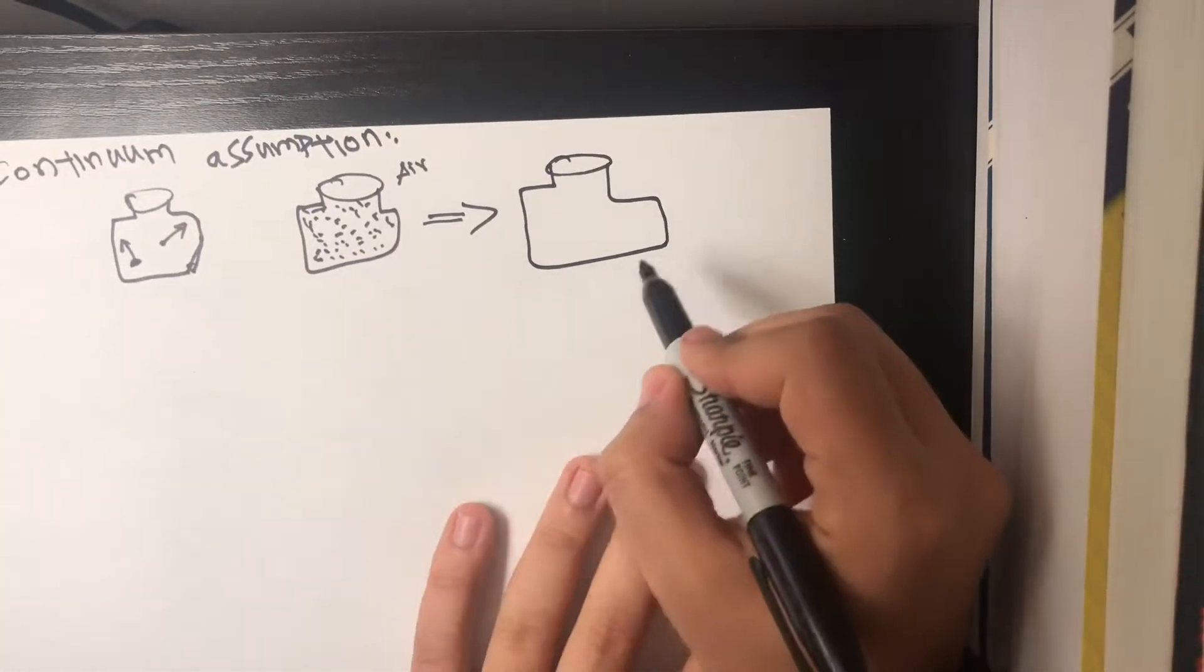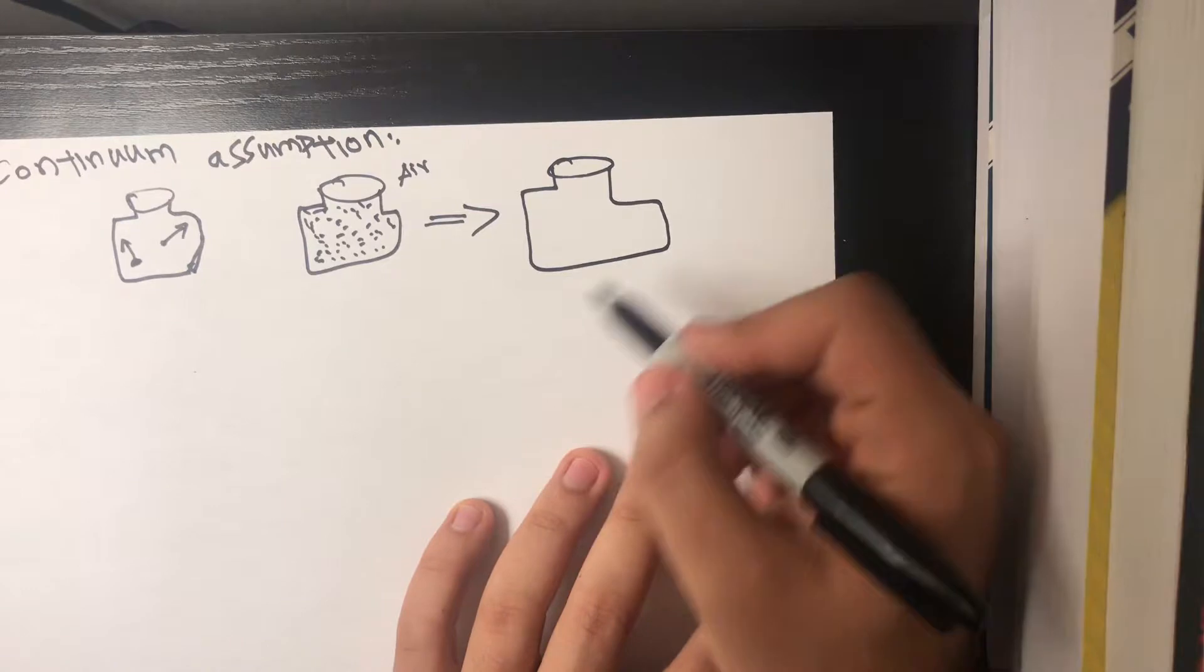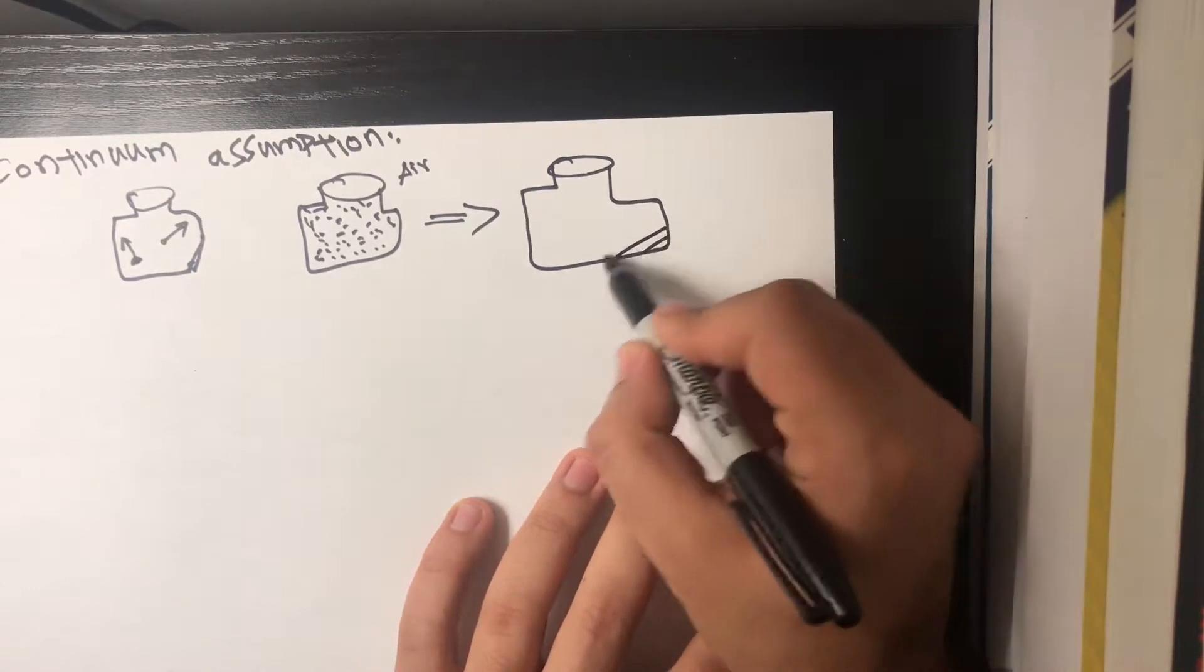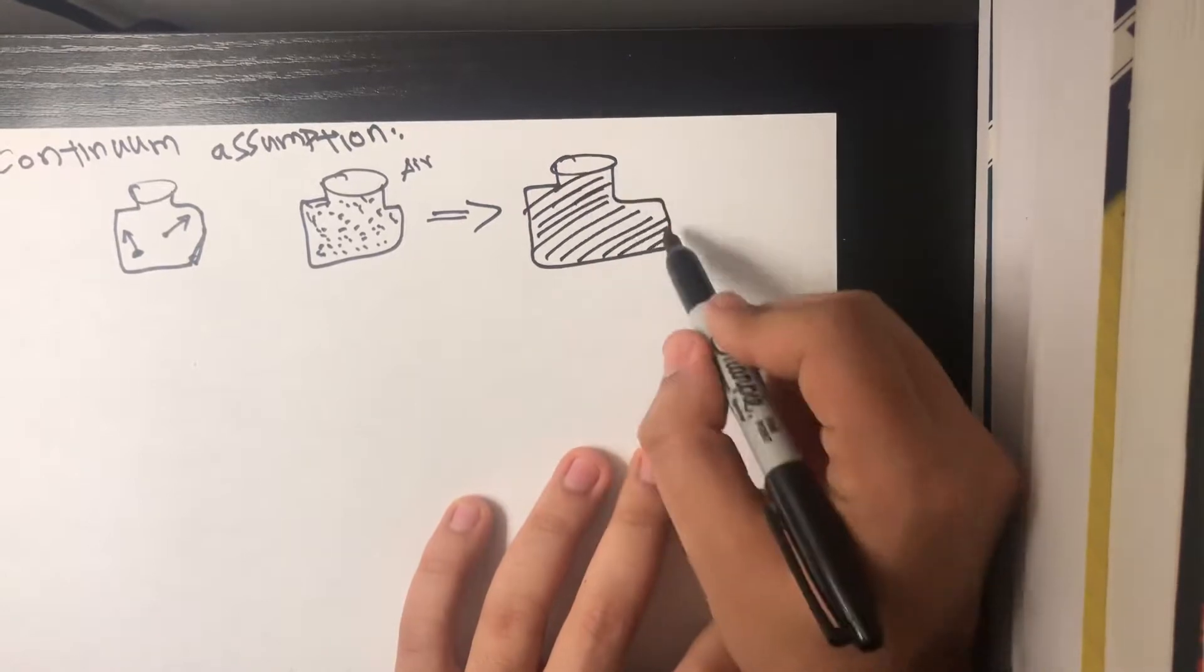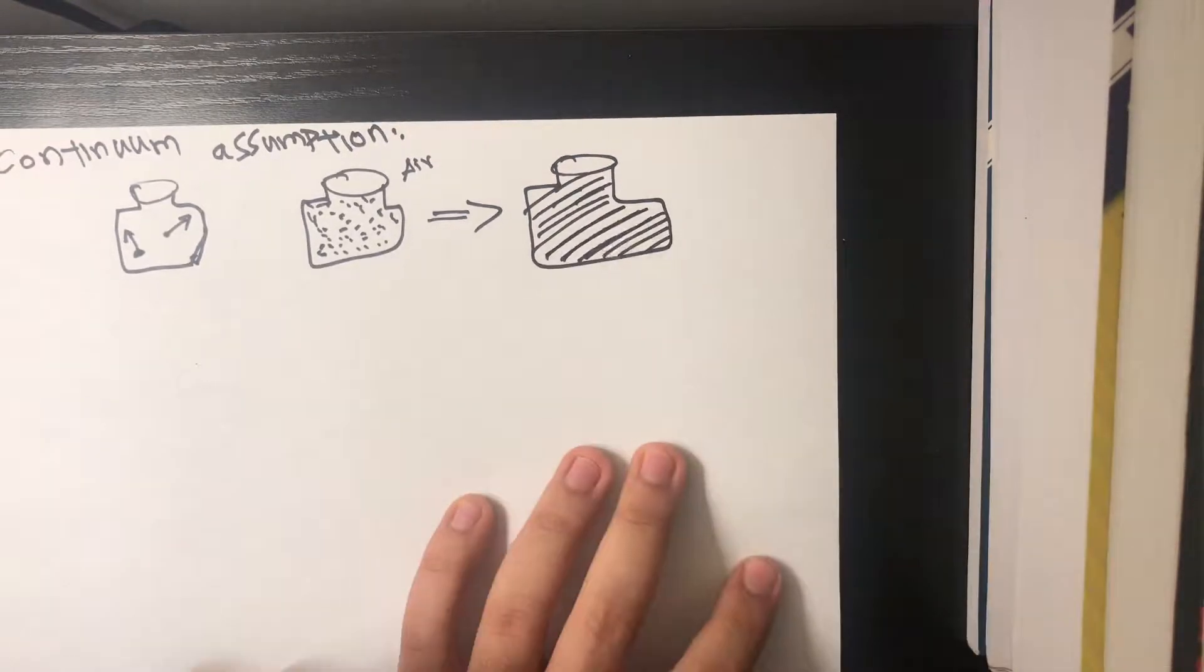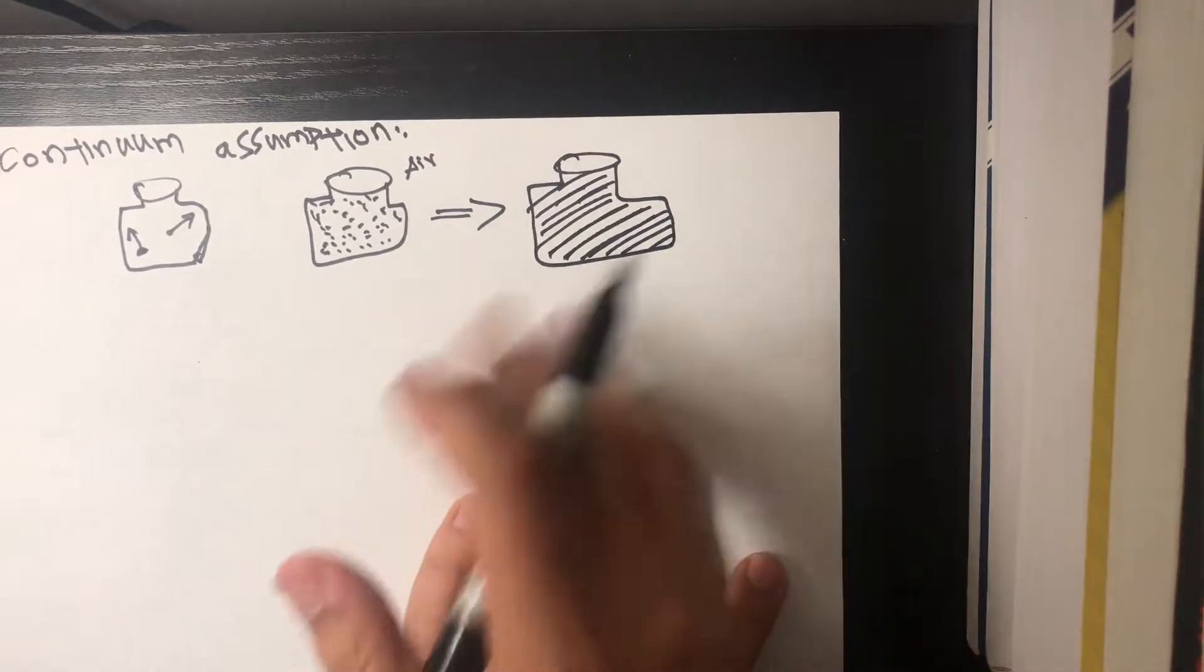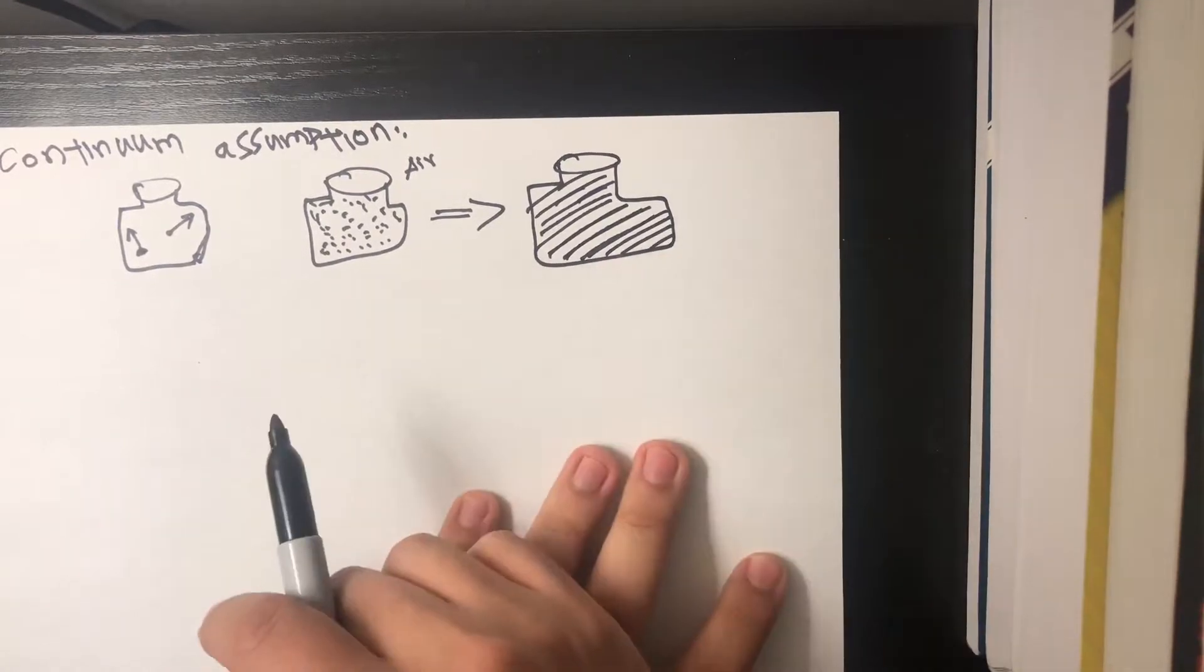And we could also, another word for it is, we can assume that this is a smoothed out jar, meaning that we neglect all molecular effects in this situation as we're studying it.